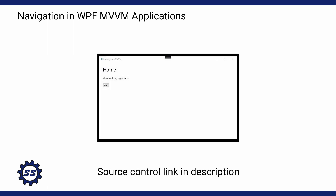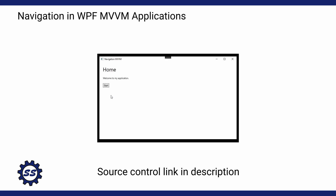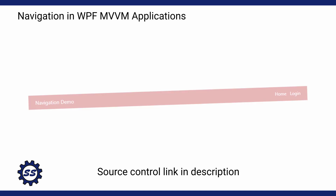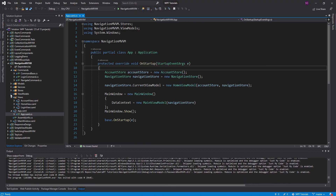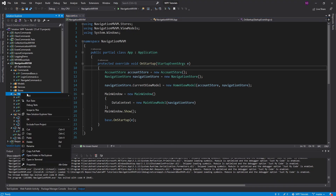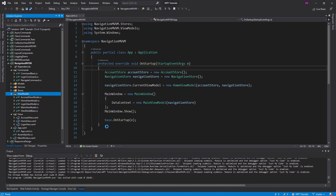We have a pretty solid navigation infrastructure in our application. We can click between pages, but our navigation is still kind of lame, because clicking through these pages is kind of a pain. What if I'm on the homepage and I want to go straight to the account page? What we need is a navigation bar. That's pretty common for applications. And I'm going to start off by creating a navigation bar view model.